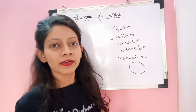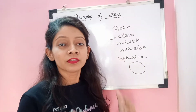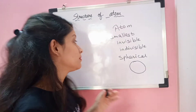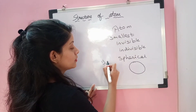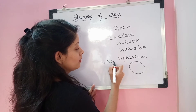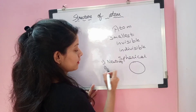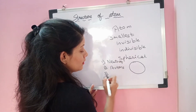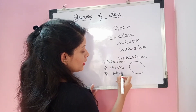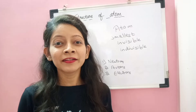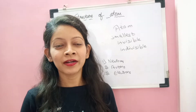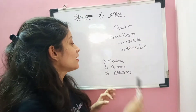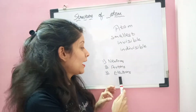Next, atom has further particles — it is divided into subatomic particles. Particles present inside the atom are called subatomic particles. Subatomic particles are divided into three parts: neutrons, protons, and electrons.